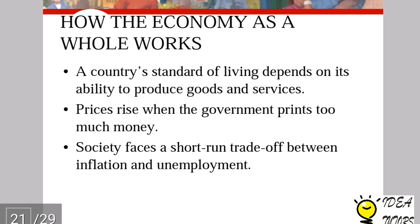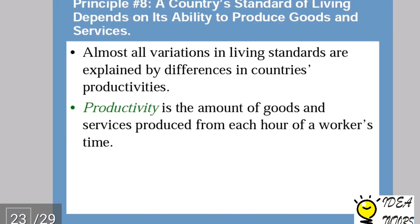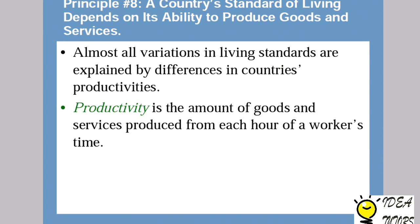The eighth principle is: a country's standard of living depends on its ability to produce goods and services. Standard of living may be measured in different ways — by comparing personal income or by comparing the total market value of a nation's production. Almost all variation in living standards is explained by differences in countries' productivity. If a country is more productive, it generates more output and more income, and that is how standard of living is measured. Productivity is the amount of goods and services produced from each hour of a worker's time.